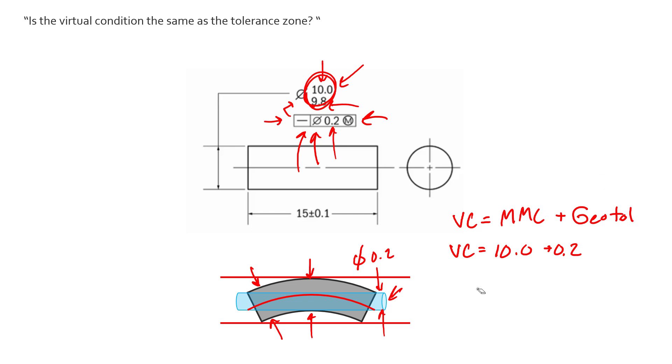Now that doesn't mean that any of our size dimensions can measure at 10.2. That's just saying this envelope that's created by virtual condition is our envelope that we can guarantee no element is going to be outside of, regardless of what happens to the size of this feature or the form error of this feature. When you combine both of those, we can guarantee you'll never have an element outside this virtual condition.